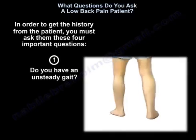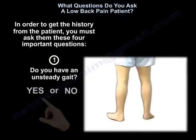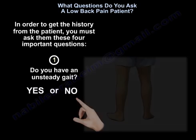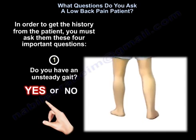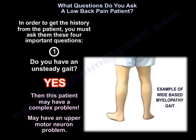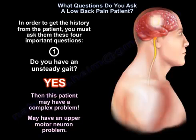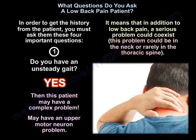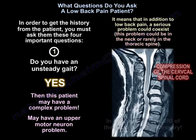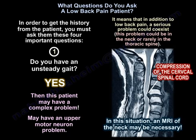The first question: do you have a steady gait? The answer is yes or no. If the patient says his gait is unsteady, then this patient may have a complex problem — an upper motor neuron problem. It means that in addition to low back pain, a serious problem can coexist, and this problem can be in the neck or in the thoracic spine. So an MRI of the neck may be necessary.